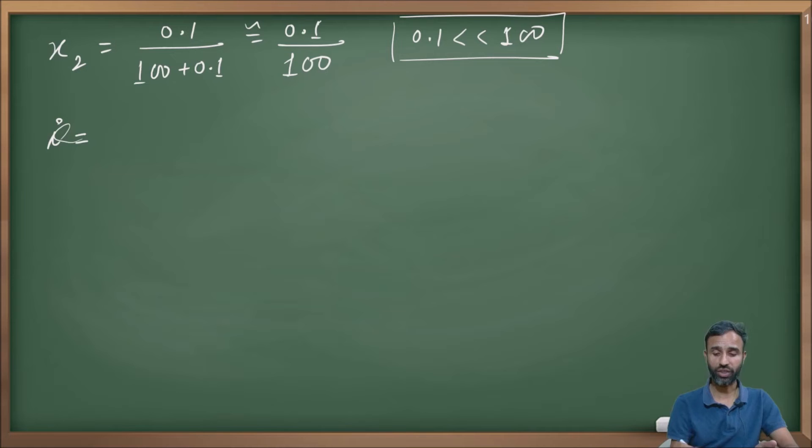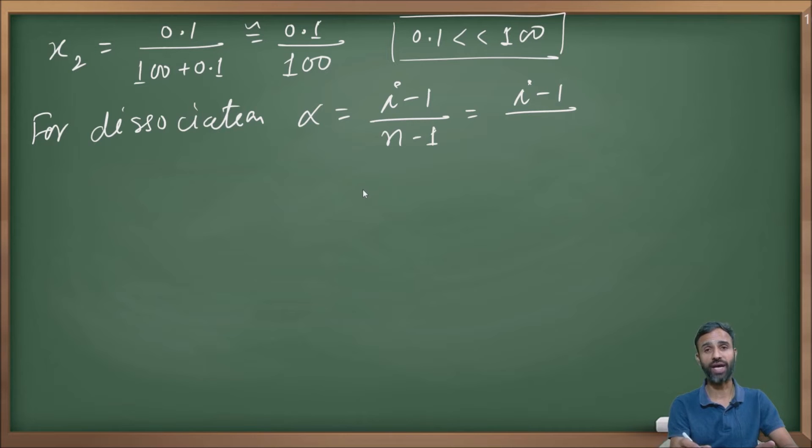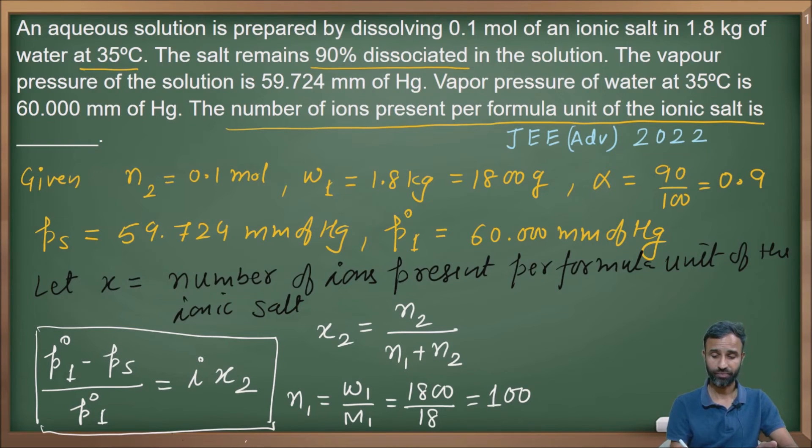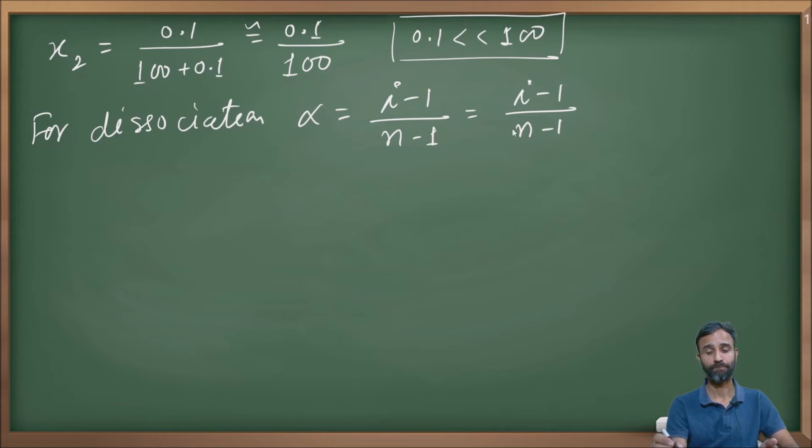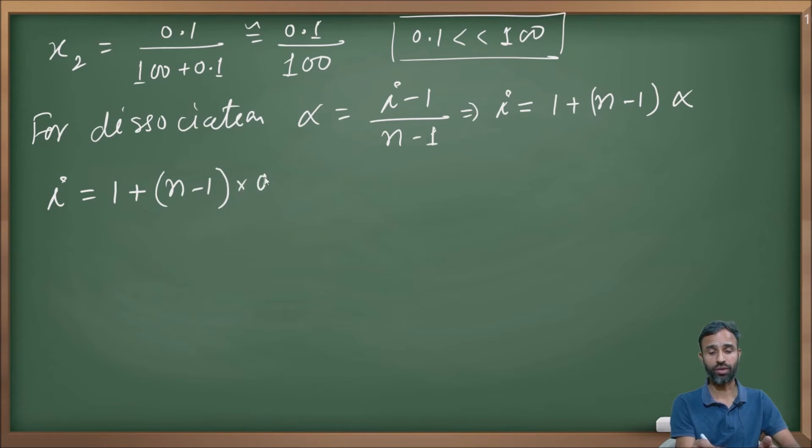For dissociation, α = (i - 1)/(n - 1), where n is the number of ions present per formula unit of the ionic salt. So i = 1 + (n - 1) × α = 1 + (n - 1) × 0.9 = 0.1 + 0.9n.